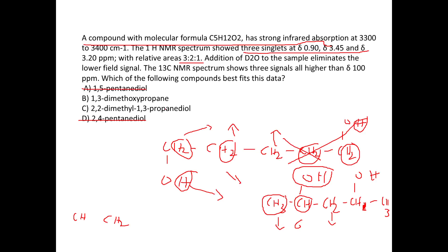Now let's look at 2,2-dimethyl-1,3-propanediol. The structure is: a central quaternary carbon bearing two methyl groups (CH₃ and CH₃), with CH₂OH on both sides — so we have two CH₂ groups and two OH groups, and no proton on the central carbon.